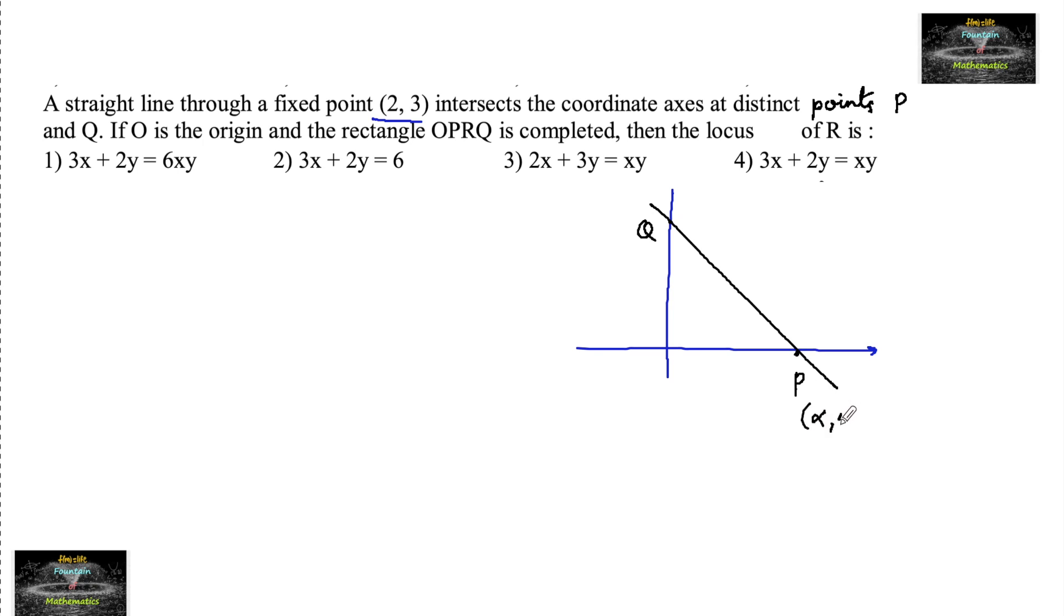Say this is (α,0) and this is passing through some fixed point. So let me take out this point. (2,3) is a fixed point it is passing.